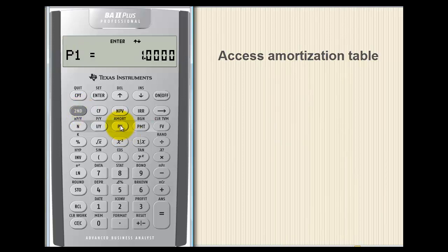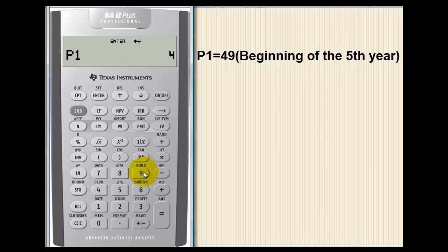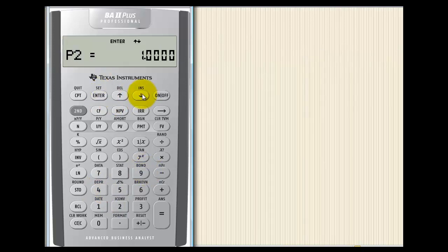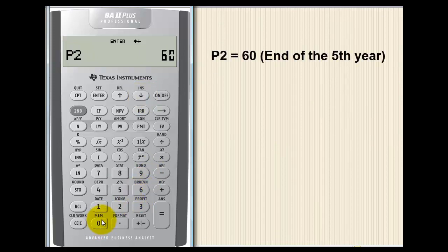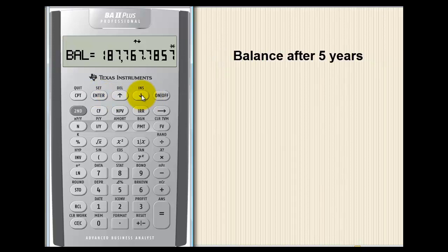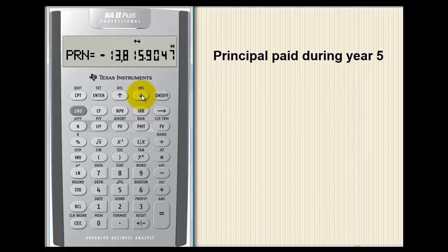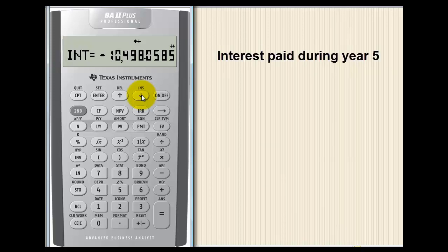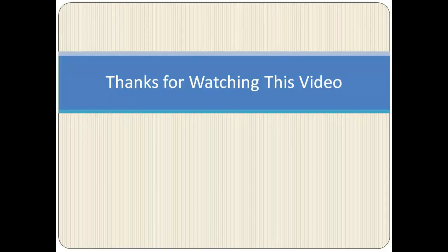We access the amortization table by clicking Second, then Amort. P1 equals forty-nine as we saw earlier, and P2 equals sixty. We can see the balance after five years, and we get the principal amount and interest paid during year five. Thanks for watching this video.